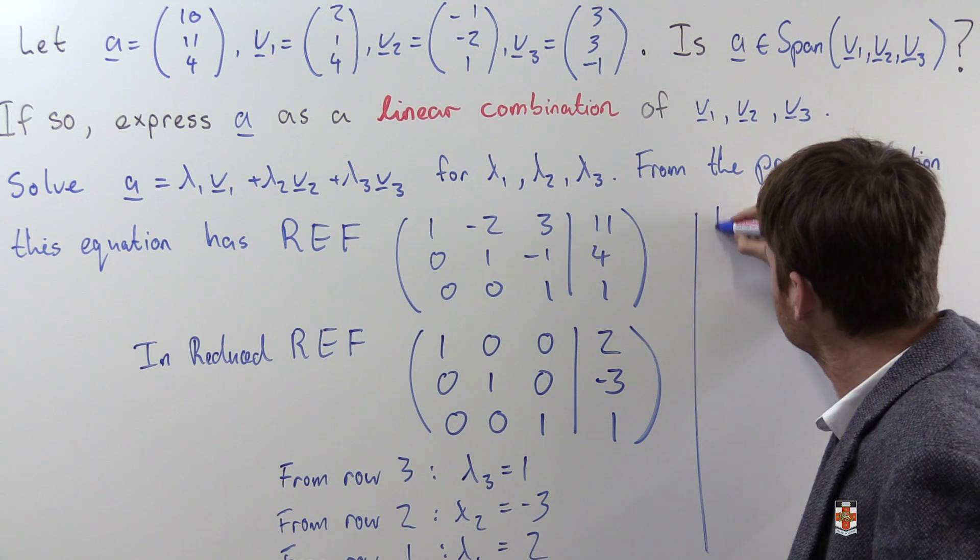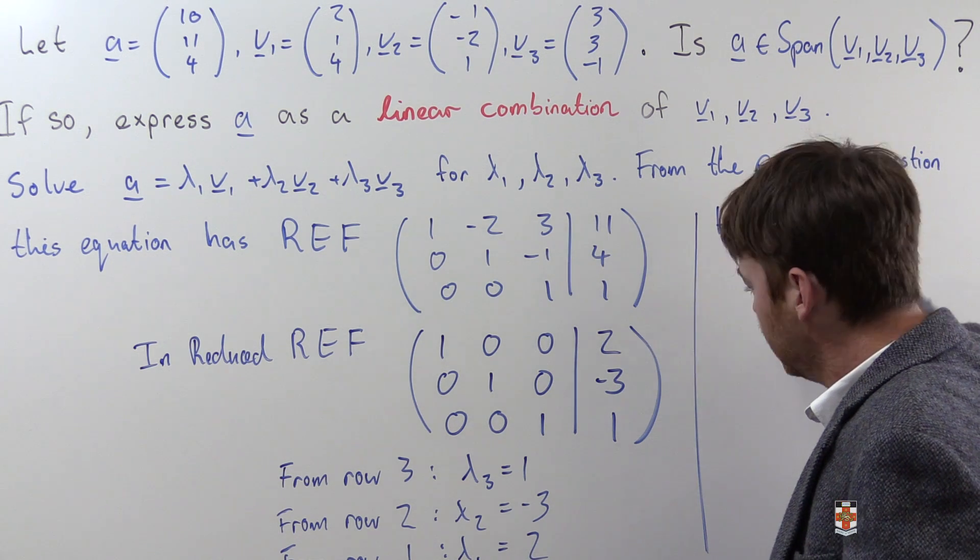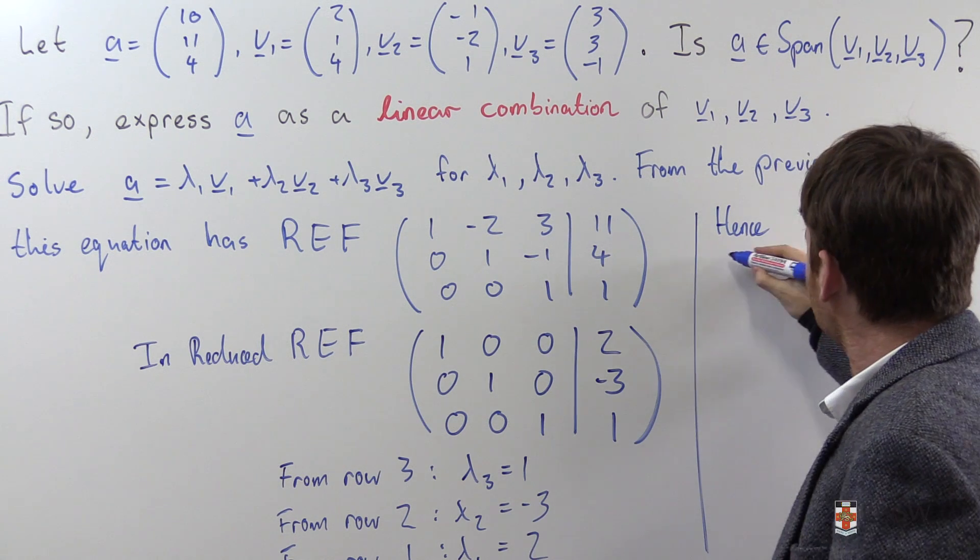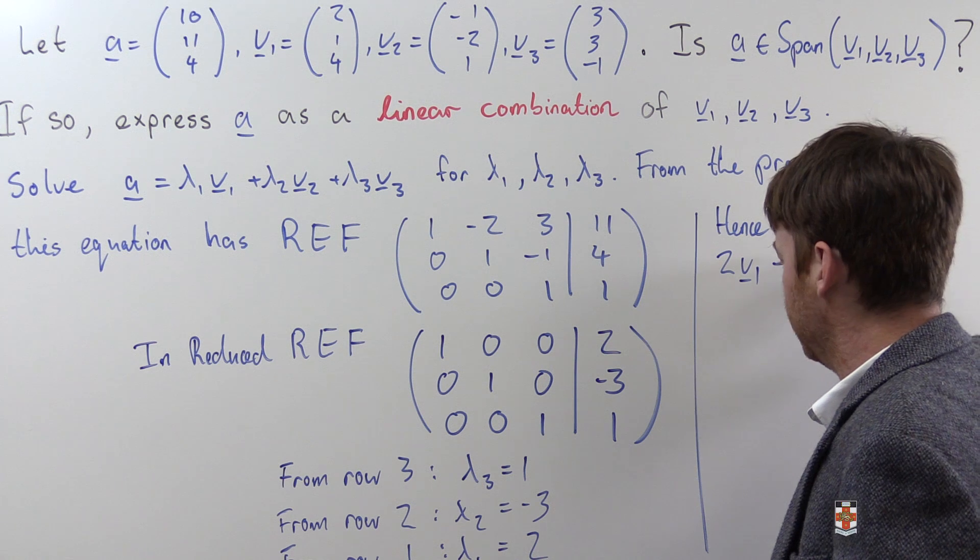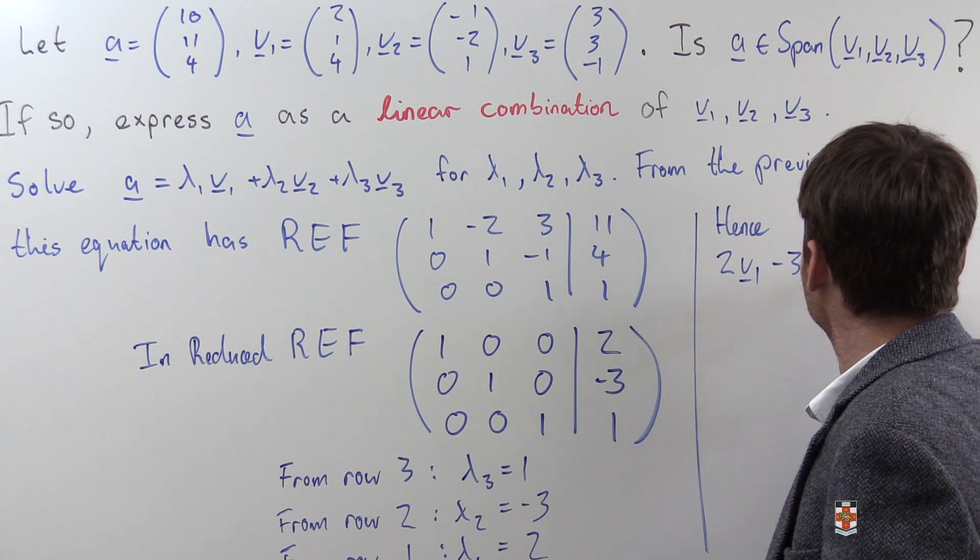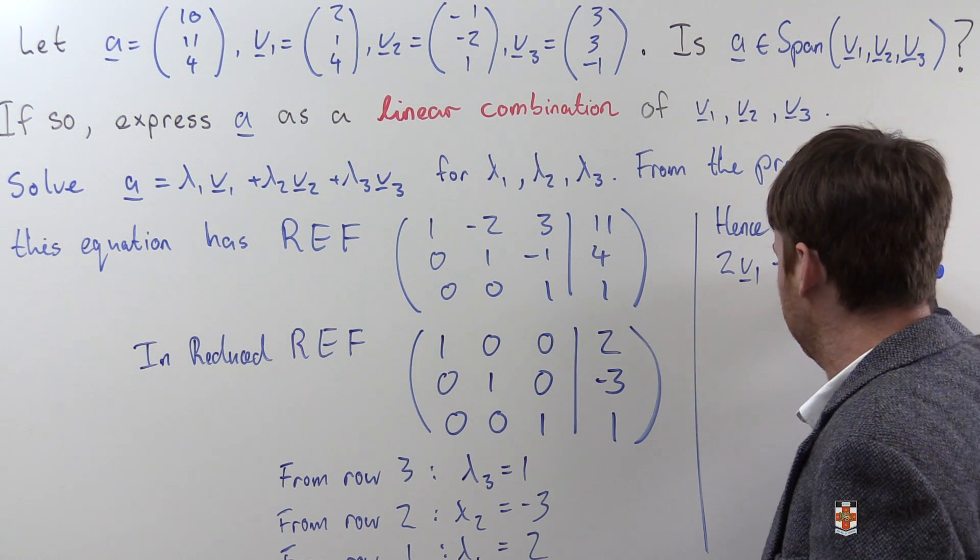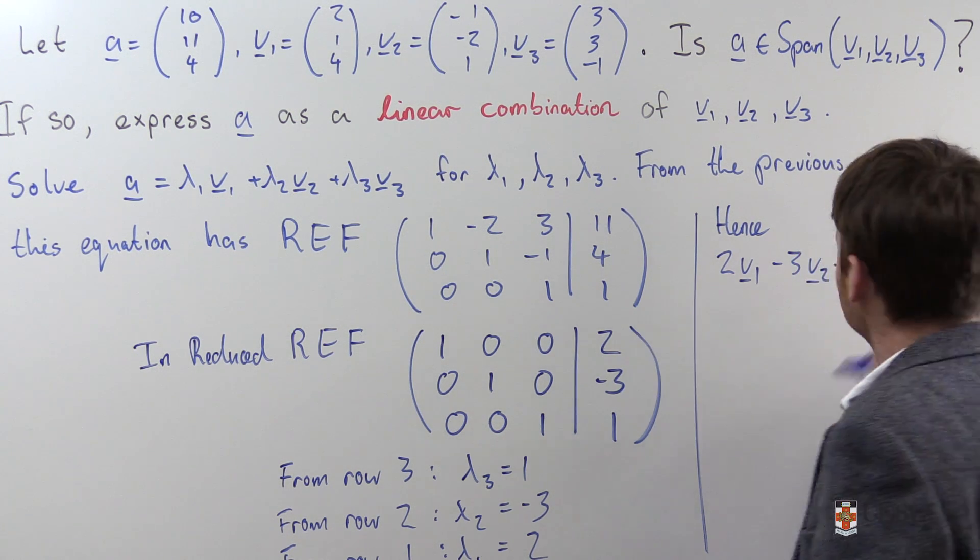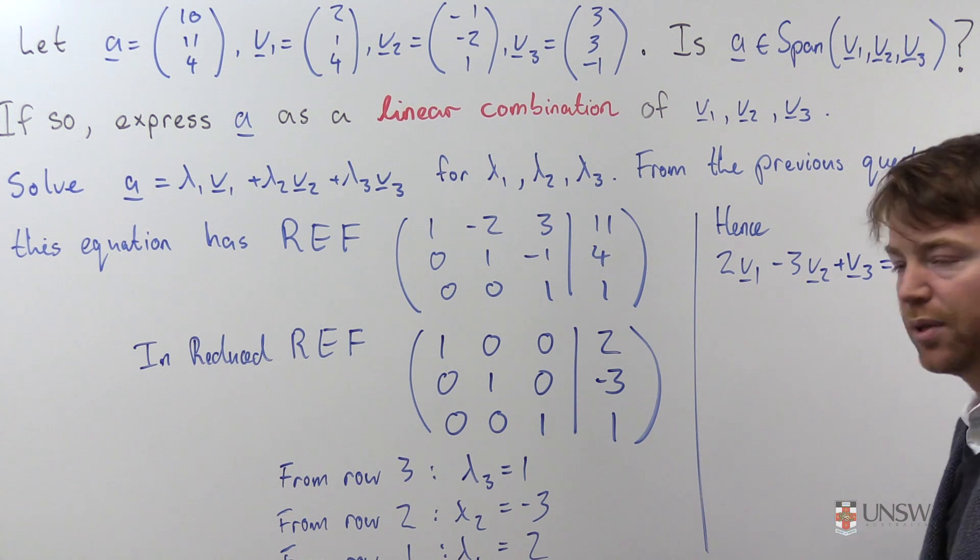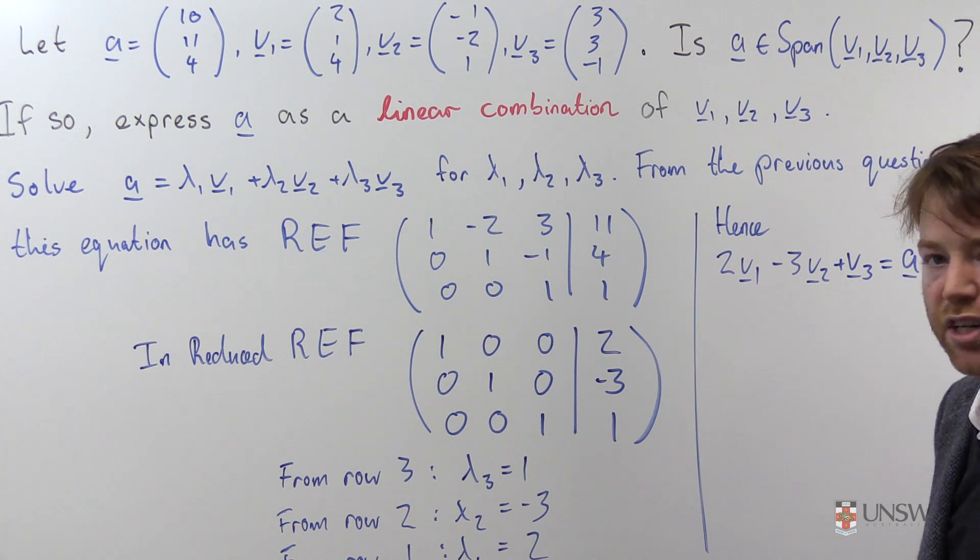Excellent. We have now solved this equation and obtained lambda 1, lambda 2, and lambda 3. Hence, a equals 2v1 minus 3v2 plus v3, is supposed to be equal to a, and we've done a lot of work to get here, so it might be worthwhile just checking this.